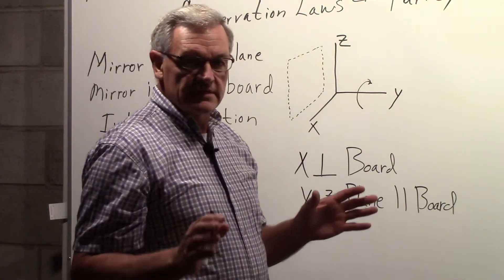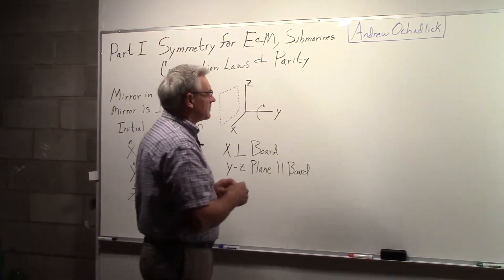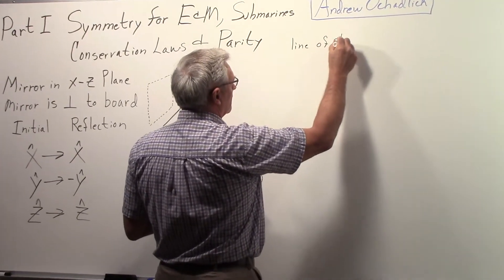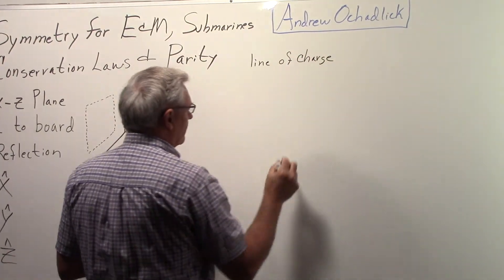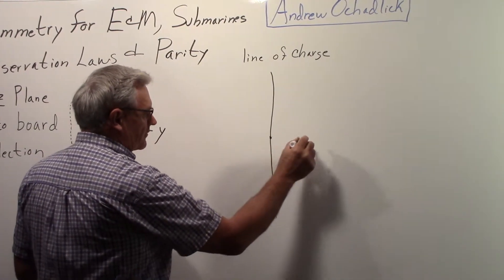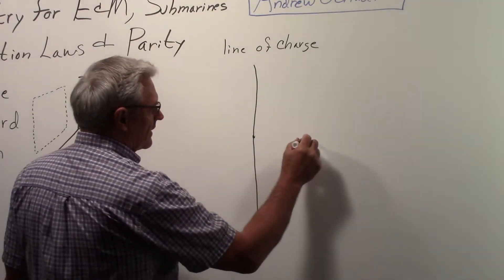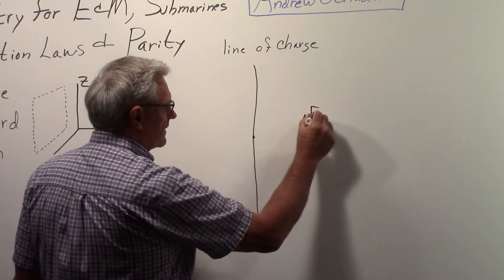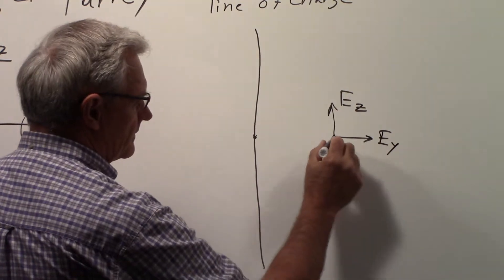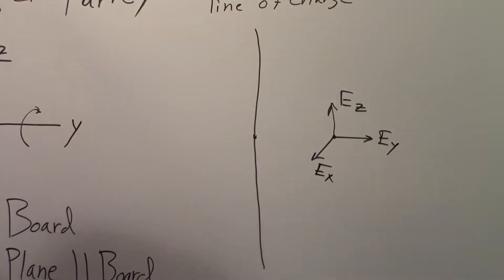The first problem we want to consider is a simple one: an infinitely long line of charge. Here's the line of charge, and we'll pick an arbitrary point and ask ourselves what the electric field is — maybe there's an EZ component, an EY component, and an EX component.